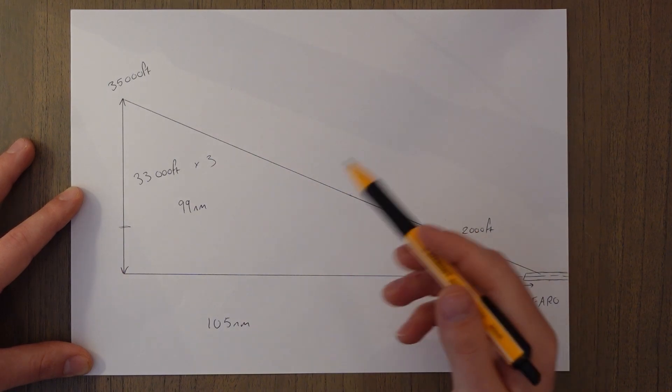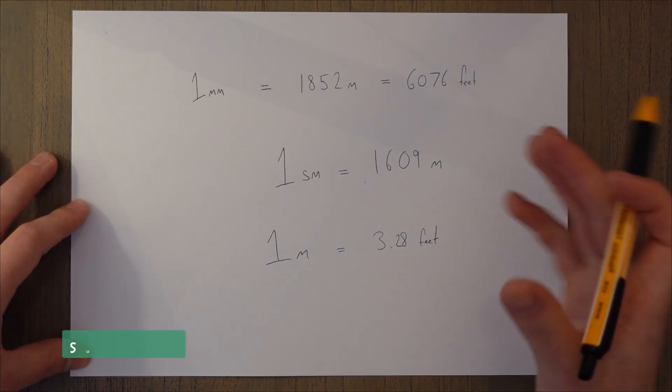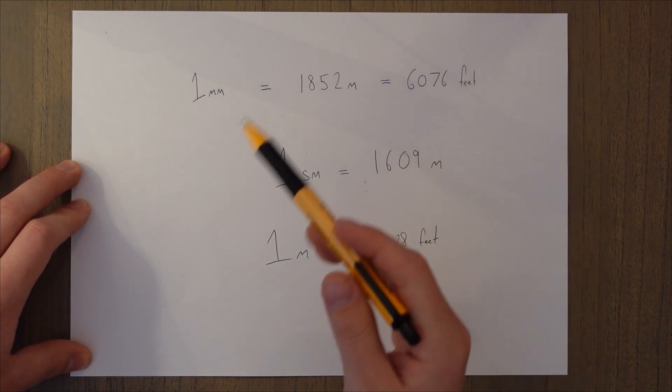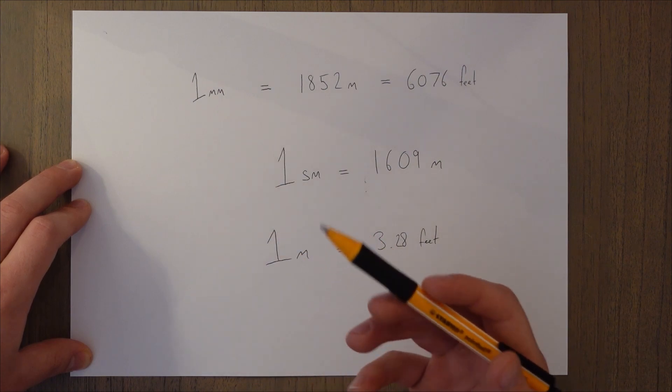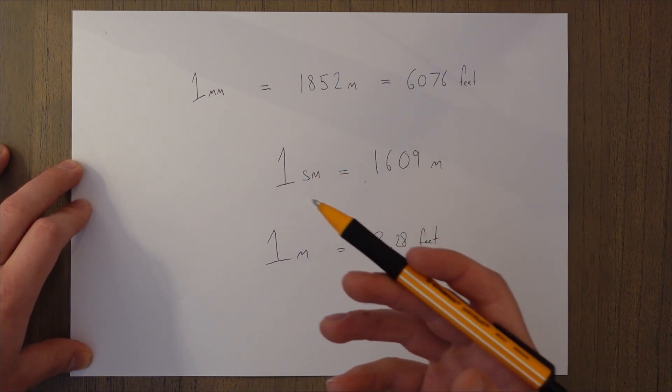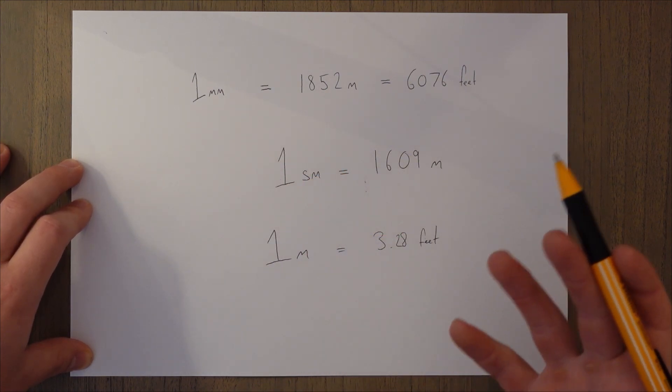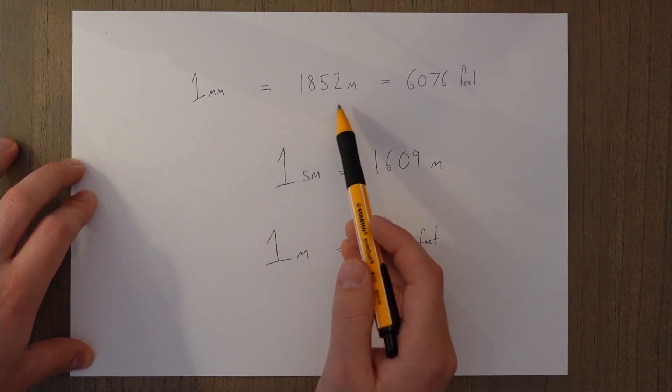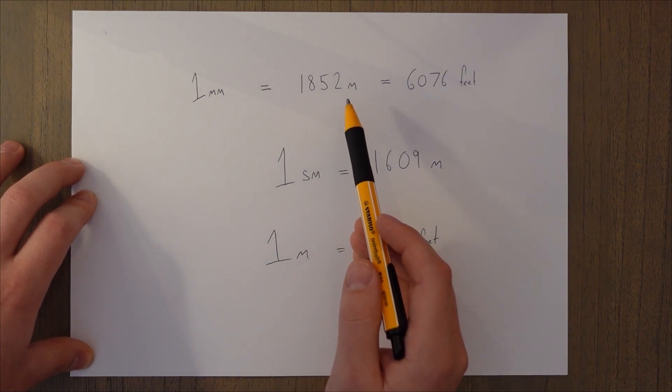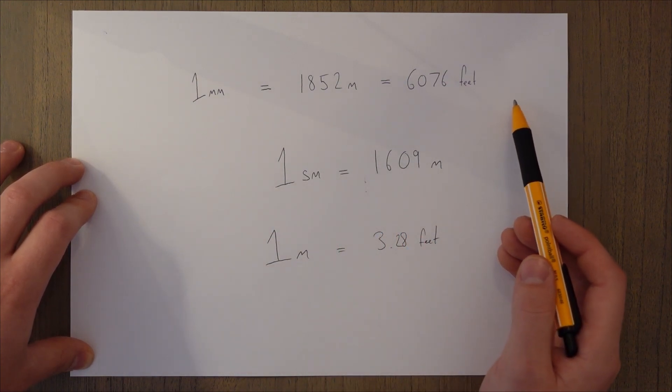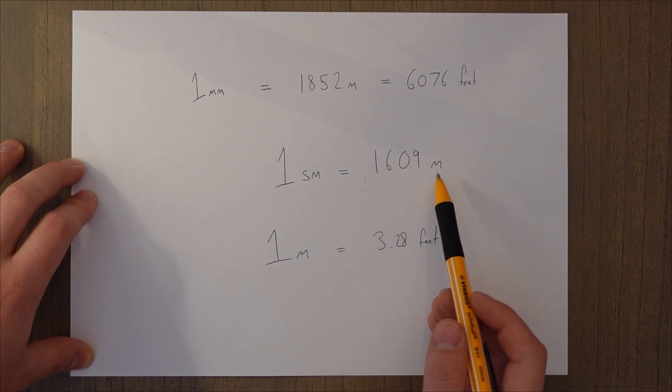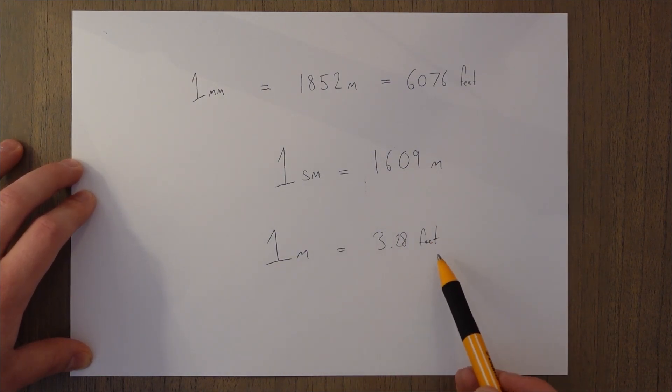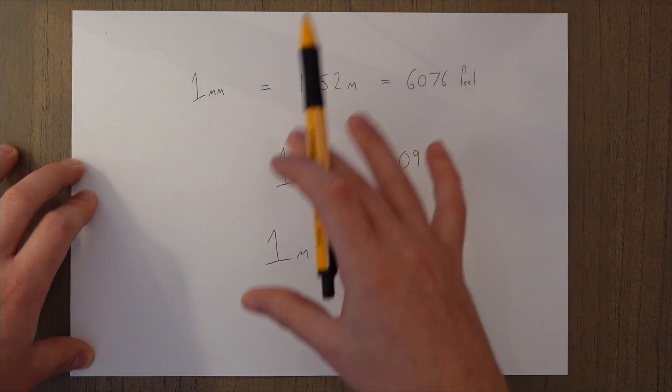So as I said, nice short class there. The only real things to remember are these conversions and that three degree slope trick of one thousand feet is three nautical miles, although that won't come up in the exam I don't think. So one nautical mile: 1852 meters or 6076 feet. One statute mile is 1.609 kilometers or 1609 meters. One meter is 3.28 feet. And convert between them as you see fit.